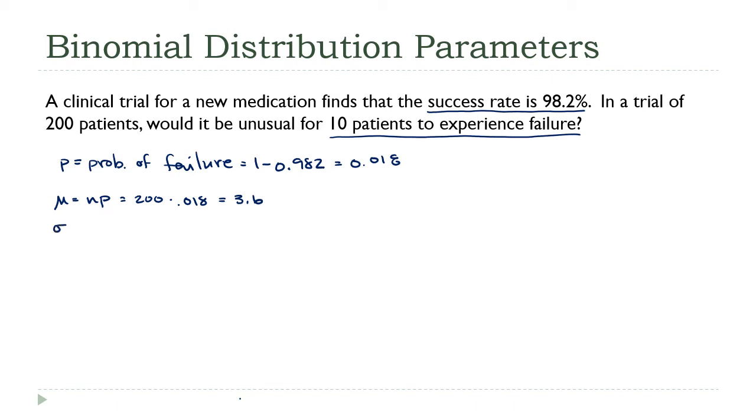From here we can get the standard deviation. Sigma is the square root of N, that's 200, times P, that's 0.018, times Q, which is 0.982, and that comes out to about 1.88.